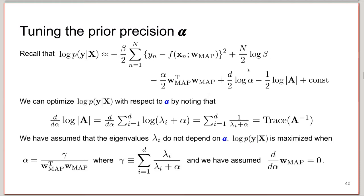With this approximation, we obtain this estimate of the marginal likelihood. It's just the log posterior evaluated at W_map. And then you have the extra term that includes the log determinant of minus the log target density. So we can now try to tune hyperparameters, in particular the prior precision.